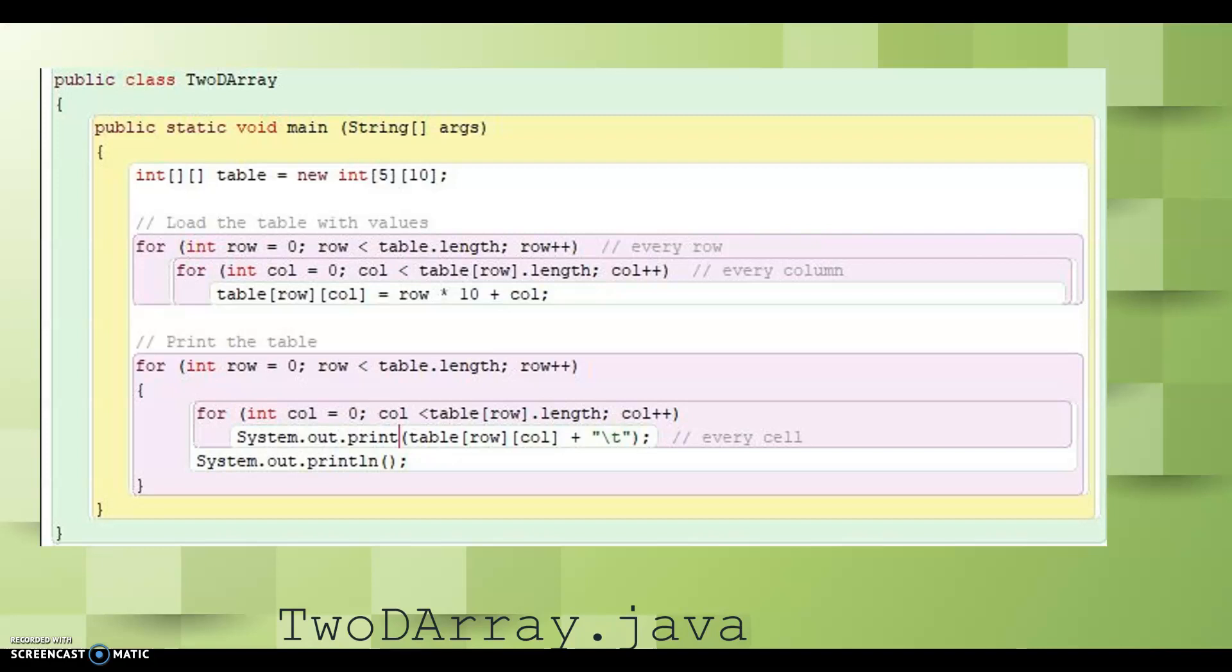Let's take a look at some examples. The 2D array program that you see on the screen right here initiates a two-dimensional array of integers. The size of the dimensions is specified when the array is created. In this case, the array is five rows by ten columns. Nested for loops are used to fill the array with values and to print them in the table. Carefully trace the processing to see how the nested loops visit each element in the two-dimensional array.